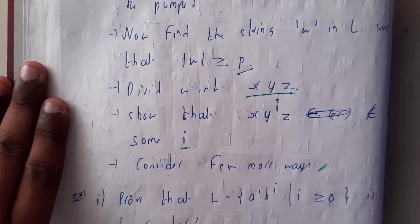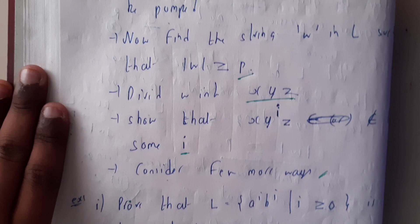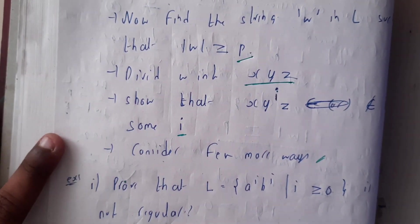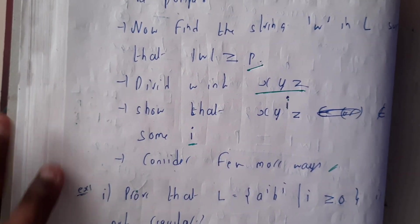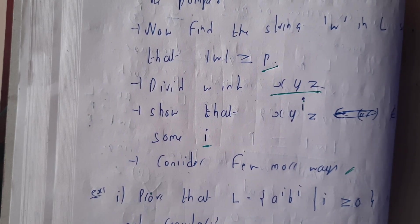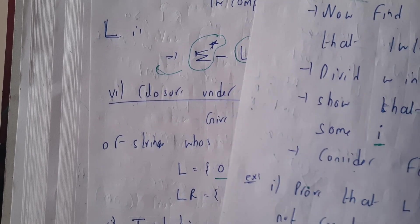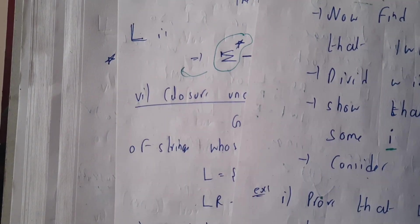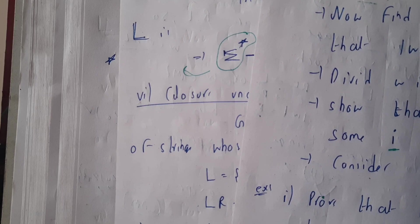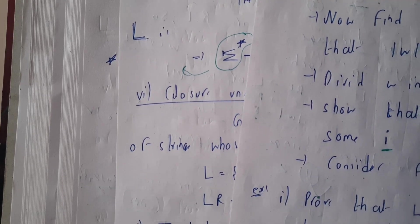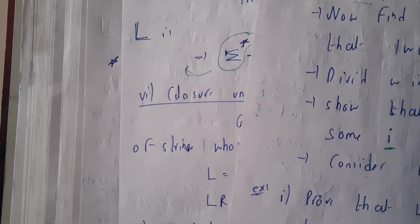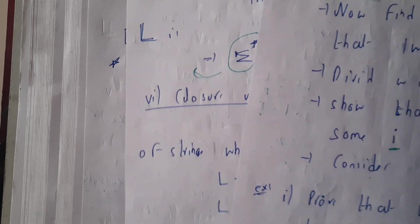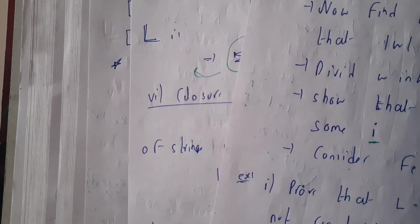Take a small example: a^i b^i where i is greater than zero. For these kinds of problems, initially you will be assuming that yes, it is a regular language, and at the end you will be showing that it is not a regular language — like a contradiction.